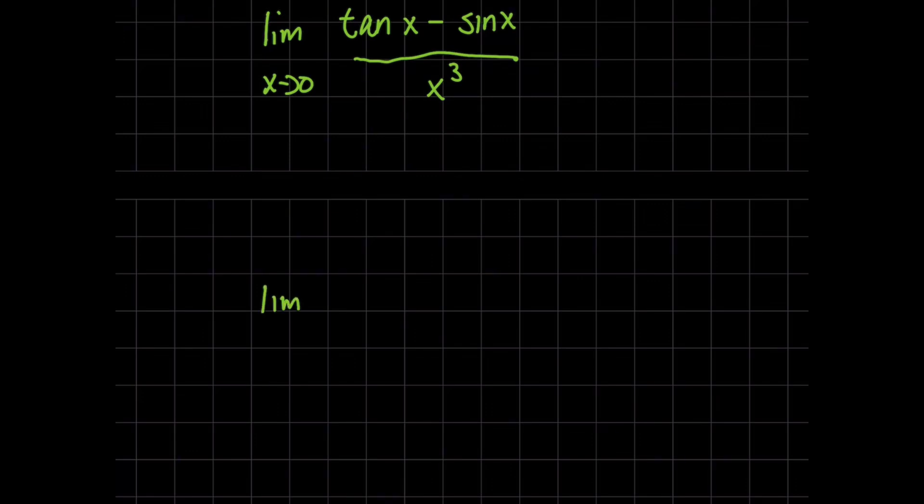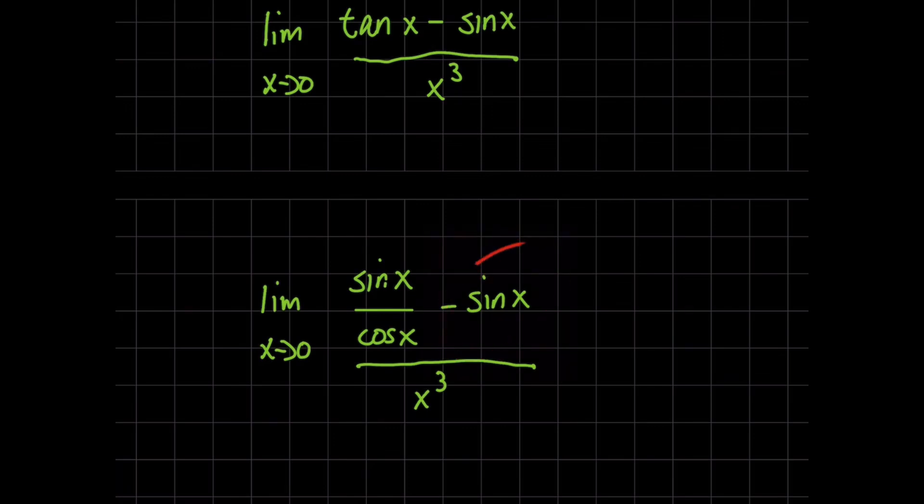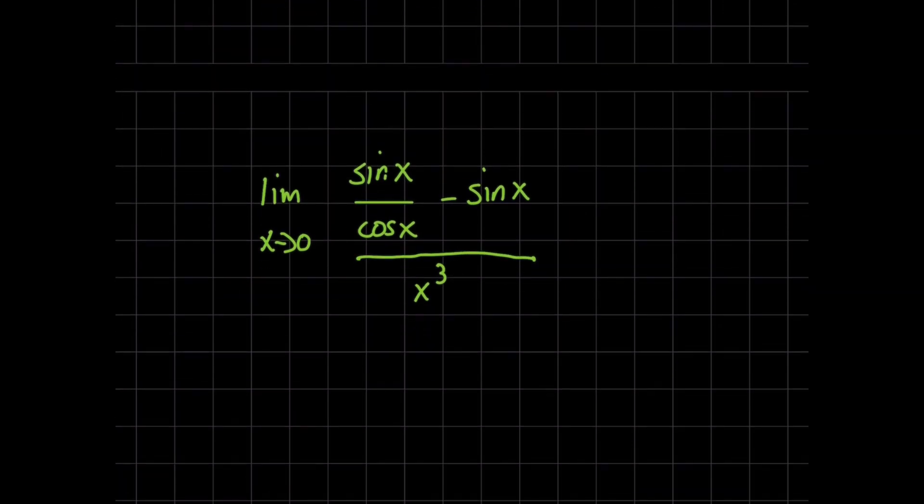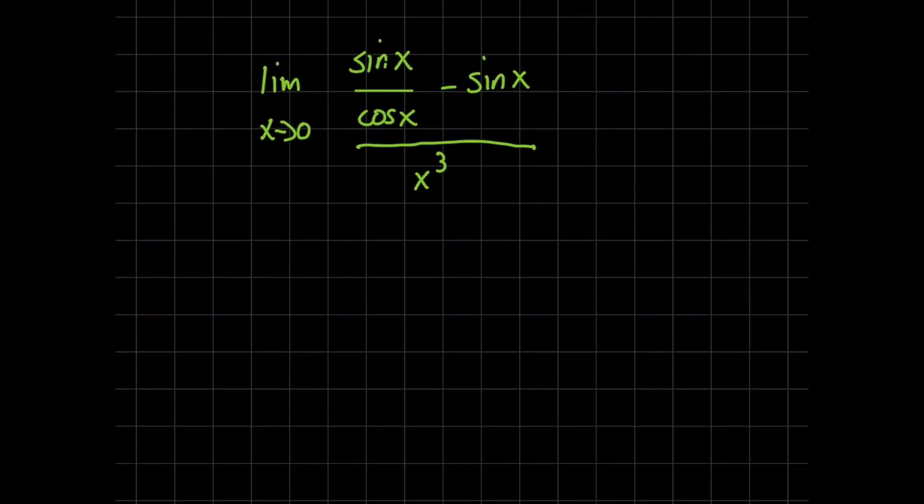So now here's the faster method. What I want to do first is I want to rewrite tangent of x as sine of x over cosine of x minus sine of x all over x cubed. And the idea for this is we have this sine of x term here. Now that we have sine of x in both parts of the numerator, we can actually factor it out. And we can see where that goes, because maybe it'll make things easier for us. So now I get the limit as x approaches zero of sine of x factored out, giving you on the inside this one over cosine of x minus one.